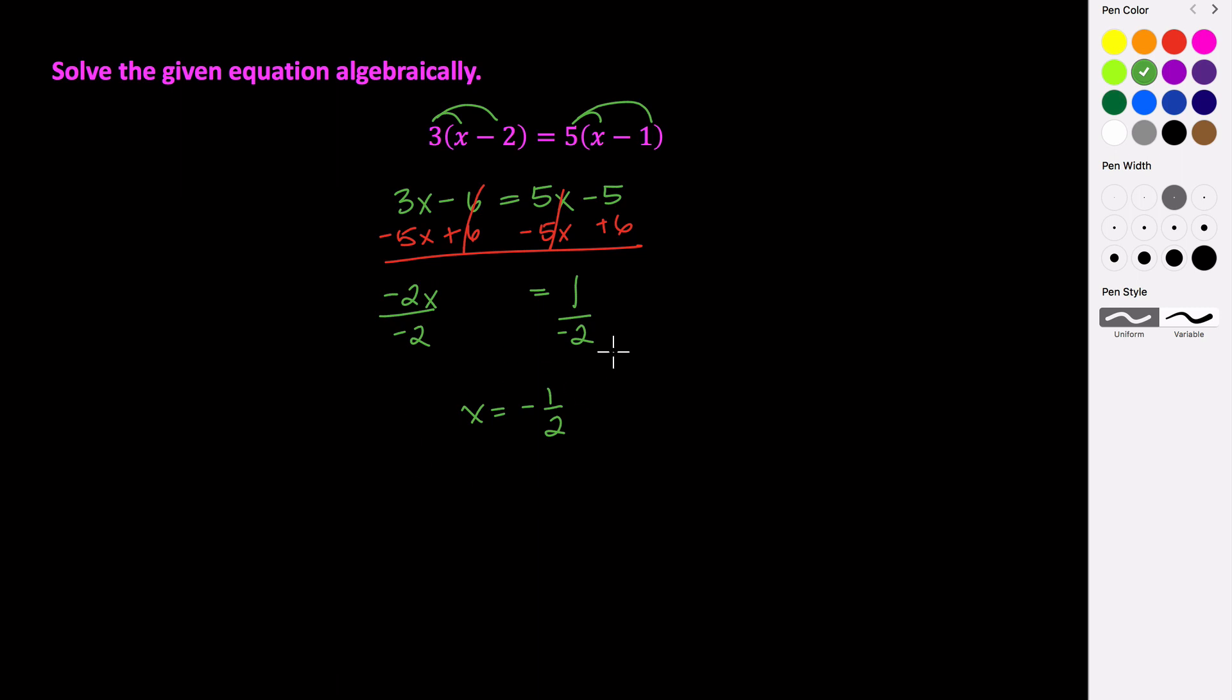So if you were to check this, you would take this negative 1 half and you could plug it in. And what it would result in is the left side equaling the right. Or if we got everything on one side, you would see that this entire equation would equal 0. It would mean our output value is 0.